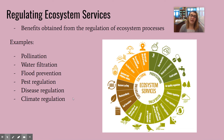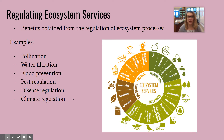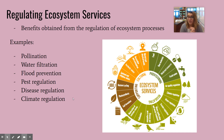Next is regulating. These are benefits obtained from the regulation of ecosystem processes, including pollination, water filtration, flood prevention, pest regulation, disease regulation, and climate regulation. These are all things that ecosystems do for us that regulate other processes. For example, soil filters our water — when water sinks through it, it filters out anything bad so we can drink it. Flood prevention and pest regulation benefit us economically, disease regulation connects to our survival, and climate regulation can also be tied to the economy.